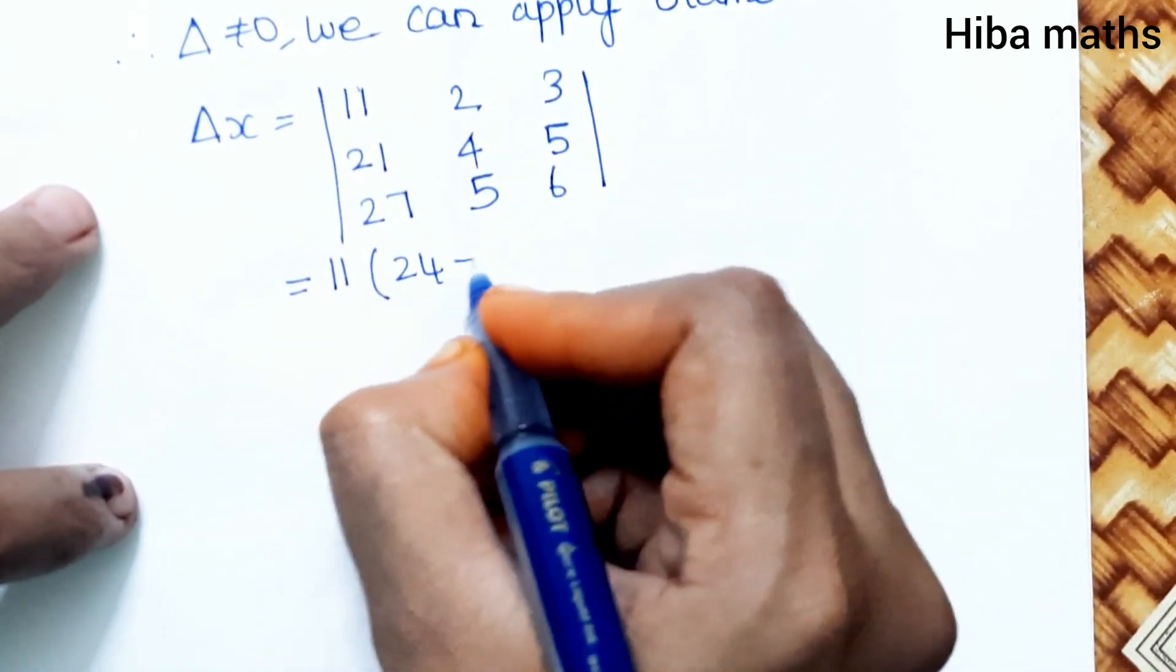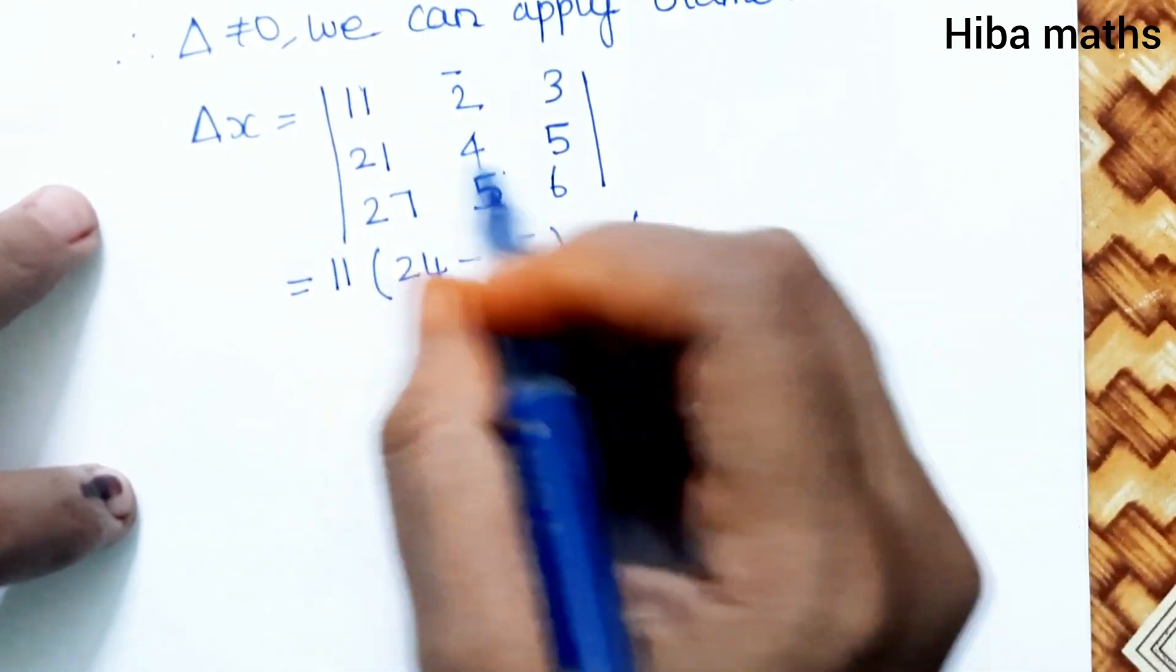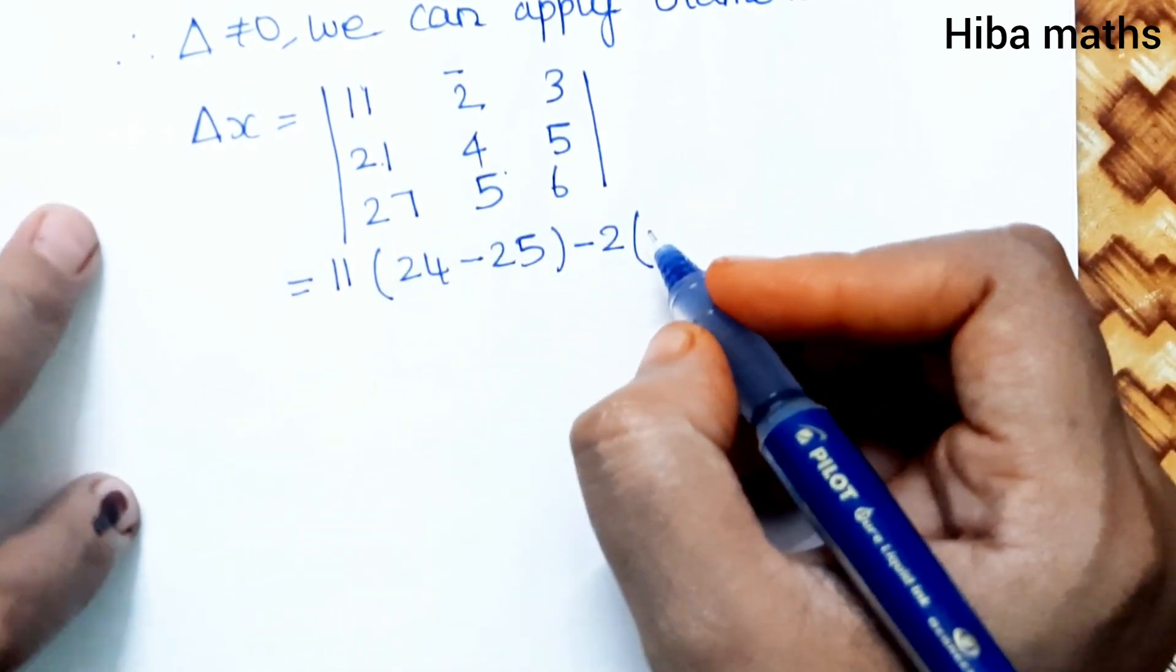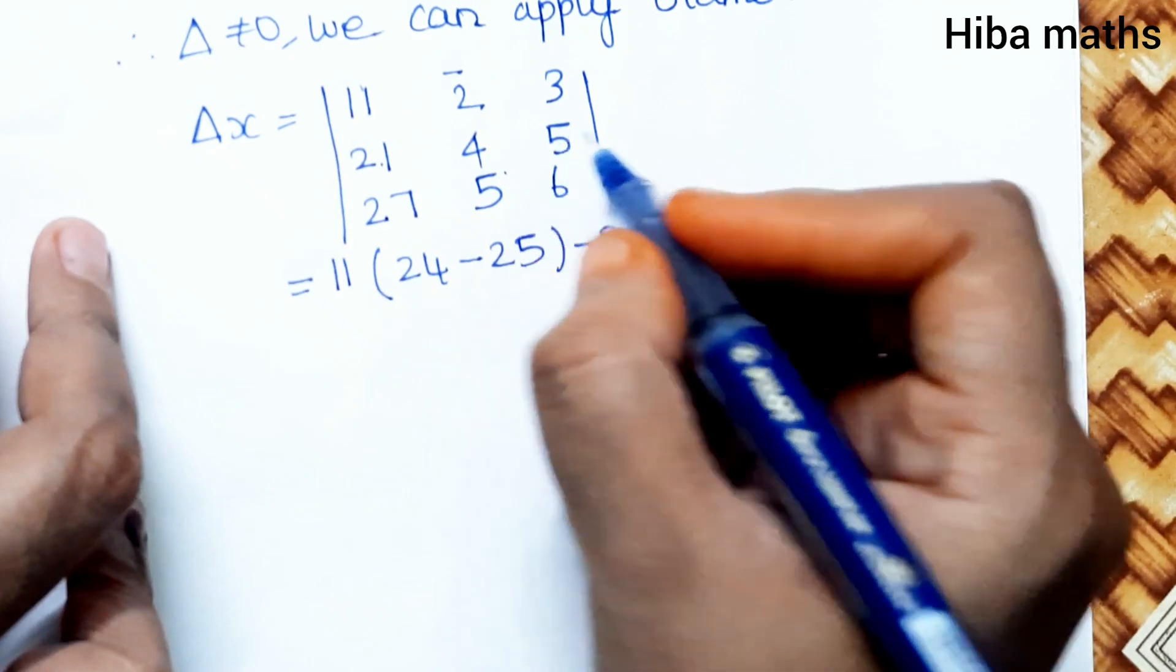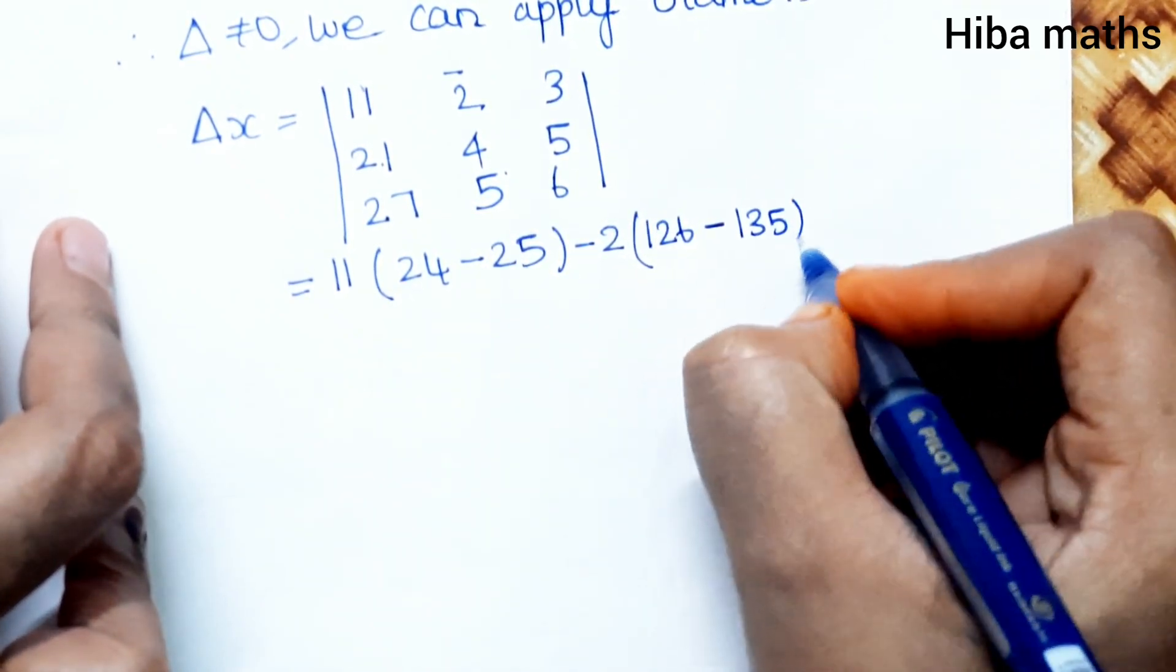Now expand: 11 into (4×6 minus 5×5) = 11×(-1) = -11. Minus 2 into (21×6 minus 27×5) = minus 2×(-9) = +18. Plus 3 into (21×5 minus 27×4) = 3×(-3) = -9.